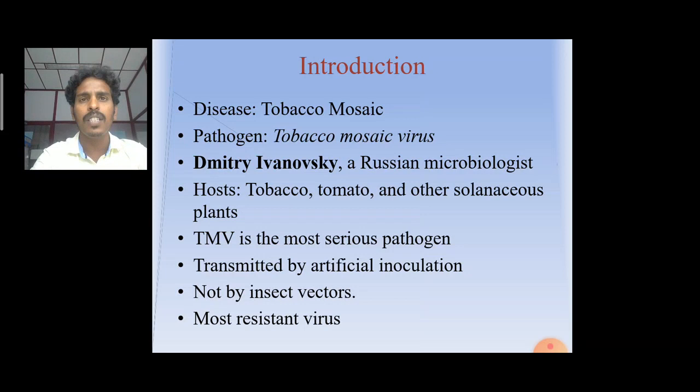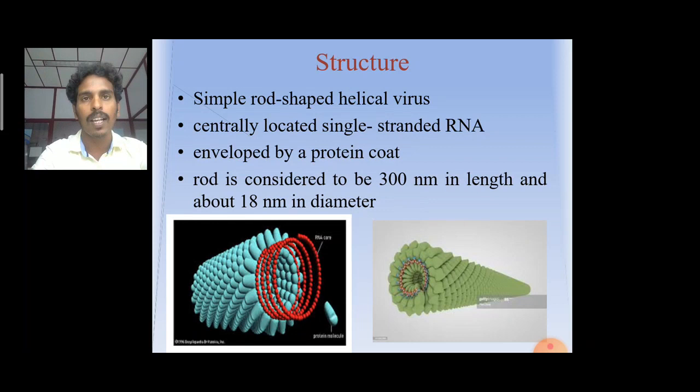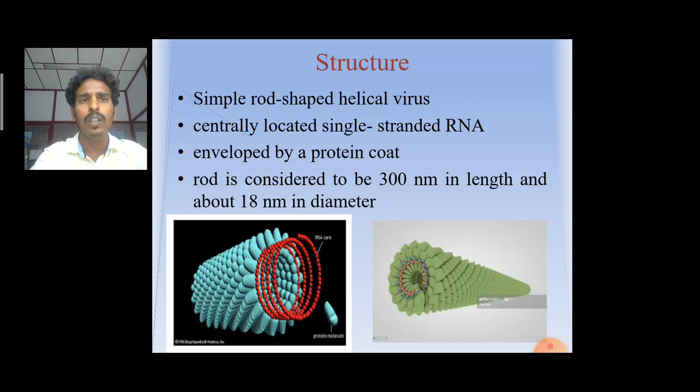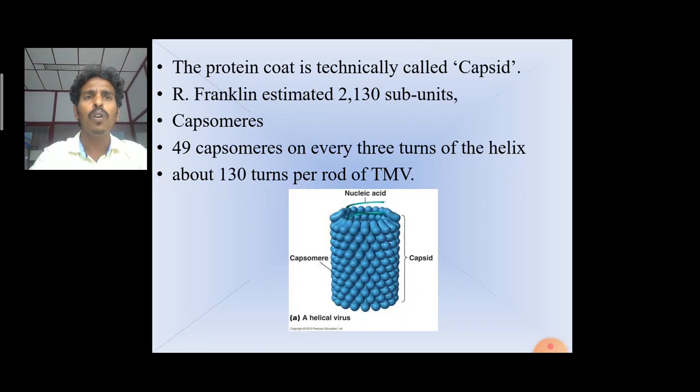The structure of TMV, tobacco mosaic virus, is a simple rod-shaped helical virus. The central core contains single-stranded RNA, surrounded by an envelope of a protein coat. This rod is considered to be 300 nanometers in length and about 80 nanometers in diameter. The protein coat is technically called the capsid. R. Franklin estimated 2130 subunits, called capsomers, with 49 capsomers on every three turns of the helix and about 130 turns per rod of TMV.